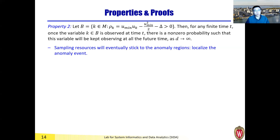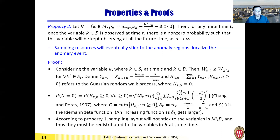Property one: when the system is in control, our sampling layout will not get stuck on certain variables — ensuring all variables are not left unattended. This is important because in practice we don't know which variable will have a problem, so no matter where the problem occurs we can quickly realize it. Property two: if the system indeed has a problem, our sampling resources will eventually stick to the anomaly regions, allowing us to localize the events.